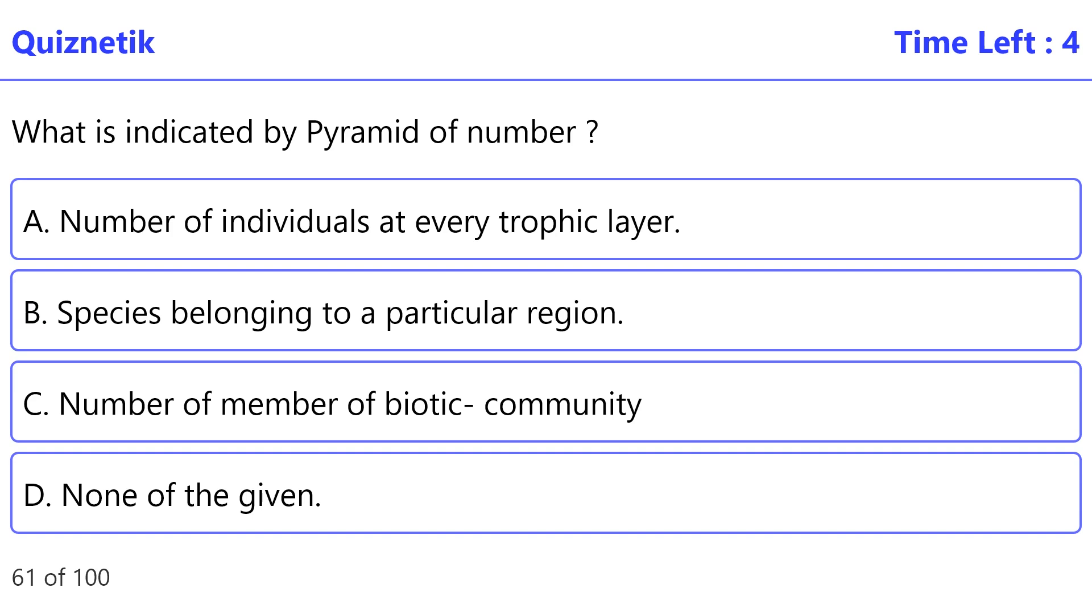What is indicated by pyramid of number? The correct option is A, number of individuals at every trophic layer.